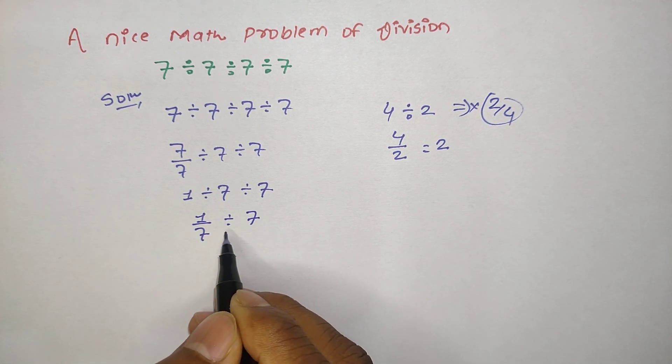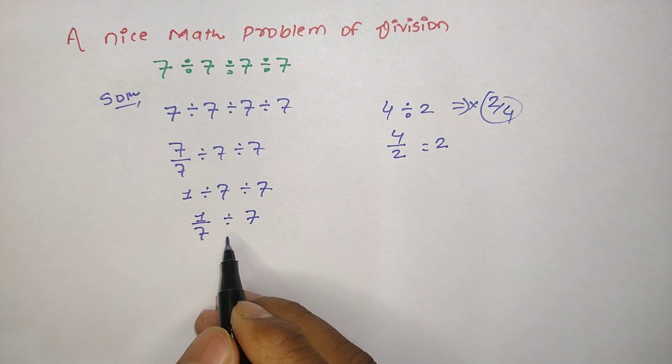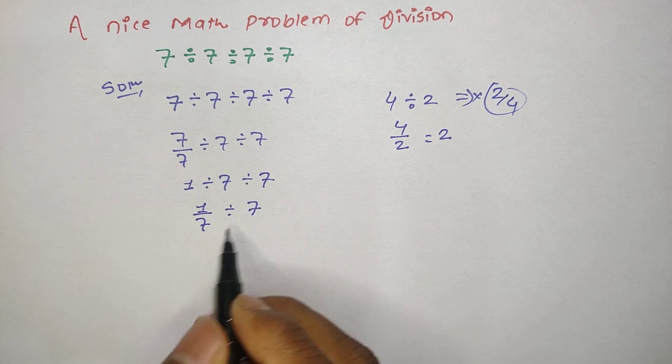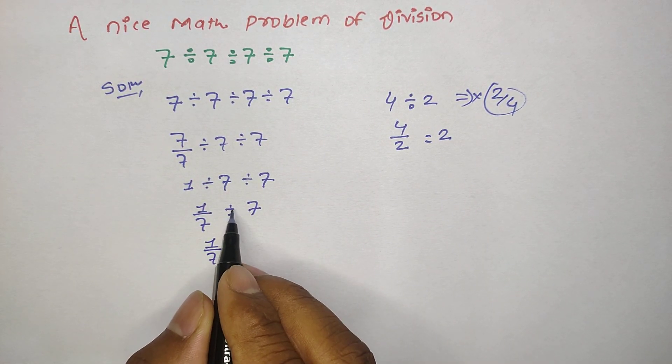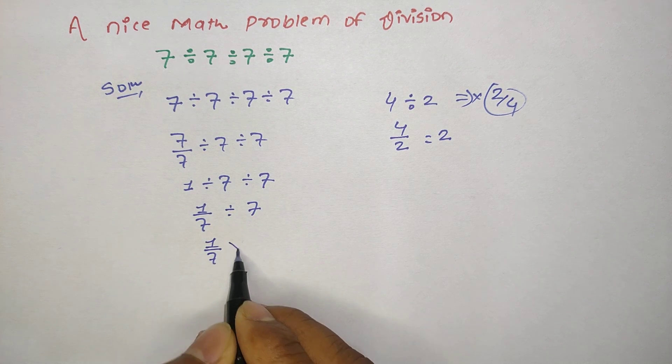Here it looks complicated, so we can change this divide into the multiplication form. So it is 1 divided by 7. Whenever we change divide into the multiplication form, we have to change this one.